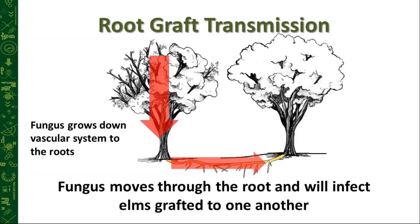Once a tree is infected, the disease can also grow down into the root system and spread underground through interconnected root systems between elms of the same species — American to American, red elm to red elm — infecting trees going down a row through root grafts.